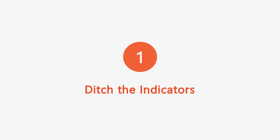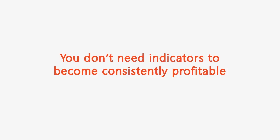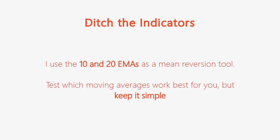There's a common misconception that you need indicators to become profitable — you don't. When I entered the market back in 2007, I thought my job was to find a magical combination of indicators like the RSI or MACD that would make me millions. That's really not the case. The one exception I use is the 10 and 20 exponential moving averages as a mean reversion tool. There's nothing special about those numbers — you can try an 8 and 15 or 12 and 25 — but I found the 10 and 20 work pretty well in any market.